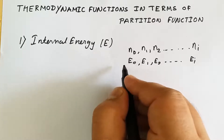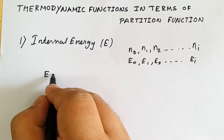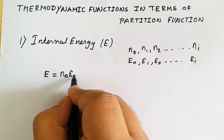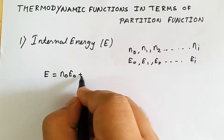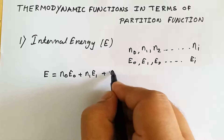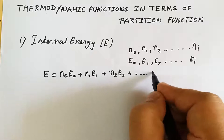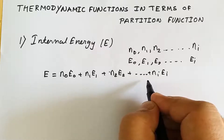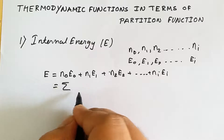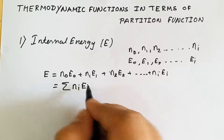The total energy E can be written as: E = n₀e₀ + n₁e₁ + n₂e₂ + ... + nᵢeᵢ, which we can write as the summation Σnᵢeᵢ.